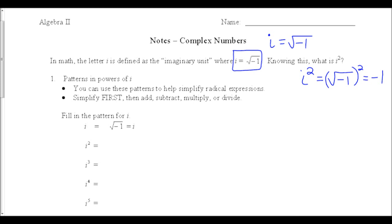What we're going to do is deal with patterns in powers of i. What happens if we keep taking i to exponents? We can use these patterns to simplify radical expressions, and we have to remember that we're dealing with things with i's or negatives under square roots. We have to simplify first, because an exponent is a radical and a radical is an exponent, and that comes first in order of operations.